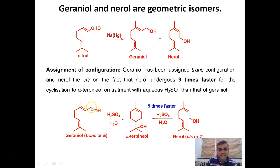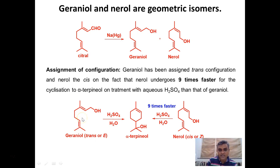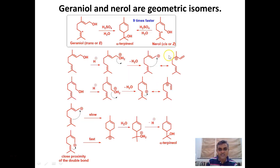It was found that geraniol on reaction with dilute H2SO4 forms alpha-terpineol. Nerol also reacts with H2SO4 and also forms alpha-terpineol, but nerol as the cis isomer reacts nine times faster than geraniol. This is because in the cis form the allylic alcohol is in close proximity to the trisubstituted double bond, whereas in geraniol the allylic carbon atom is far away from that double bond.